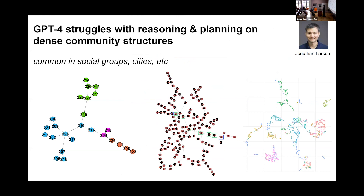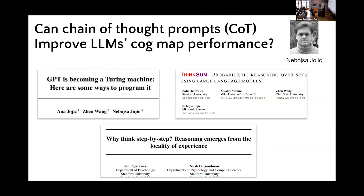My colleague Jonathan Larson tried entering the edges just with numbers — with tuples — no longer with natural language, to see how well it does. What we found is that GPT-4 struggles with reasoning and planning on dense community structures in general. When you scale up, the more loops you can fall into locally, the more it has challenges — which is very common in social networks, from departments to families to cities.